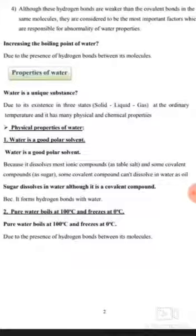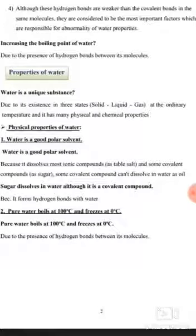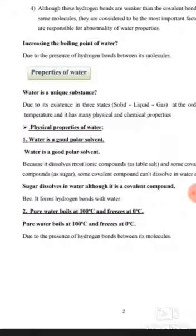Water can dissolve most ionic compounds like table salt and some covalent compounds like sugar because they form hydrogen bonds with water. However, it cannot dissolve compounds like oil because oil cannot form hydrogen bonds with water.